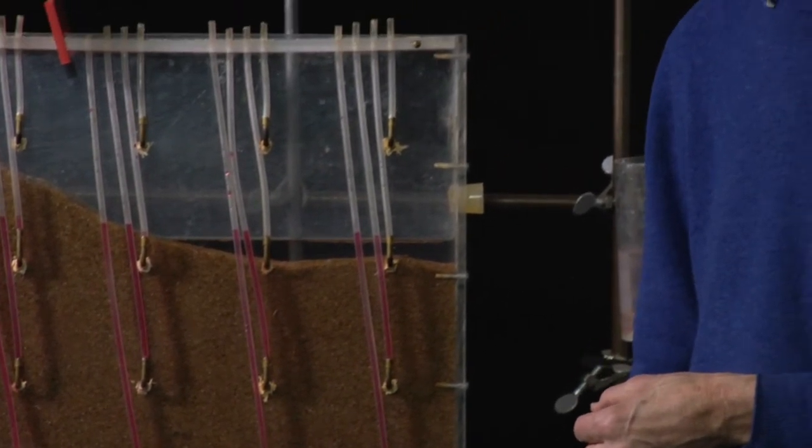From this we can draw flow lines, knowing that water is flowing perpendicularly to the equipotential lines. In this way, we can get a picture of the flow lines through the groundwater system.